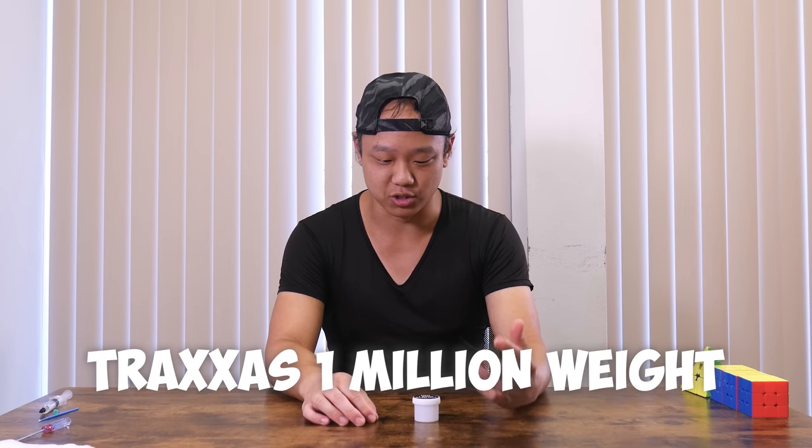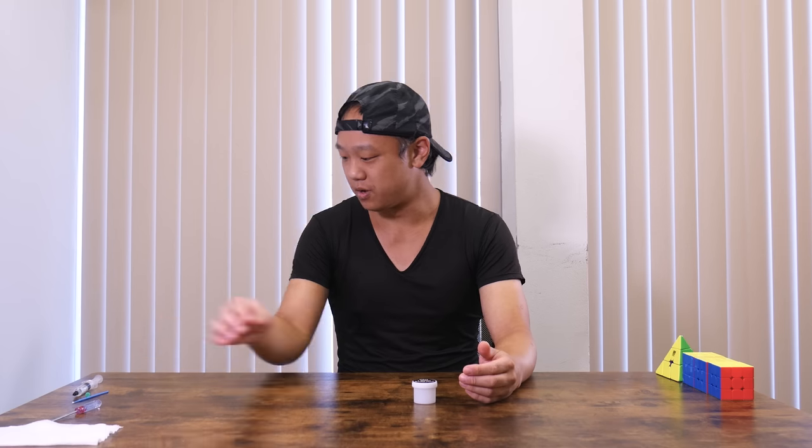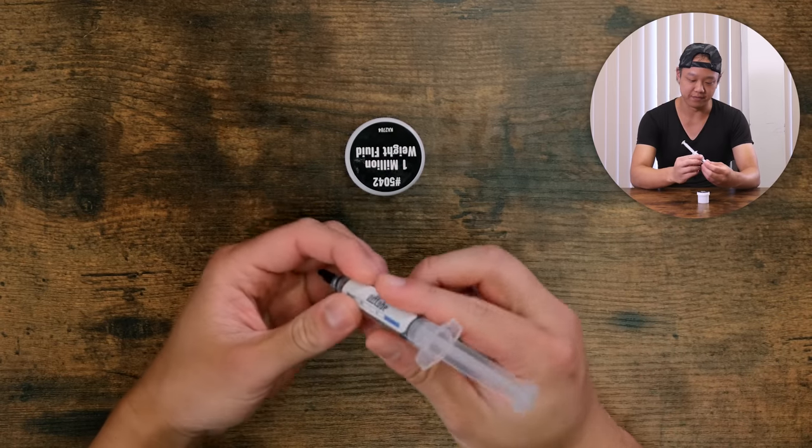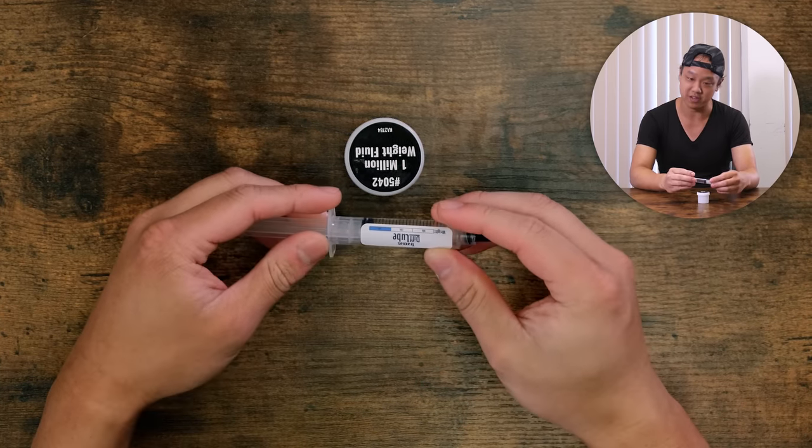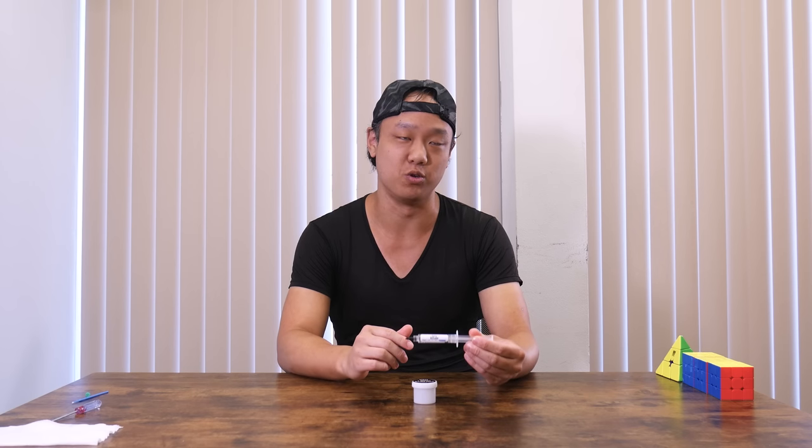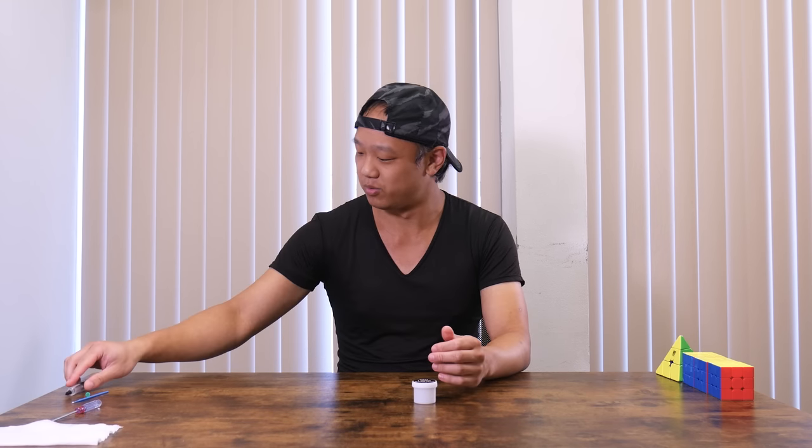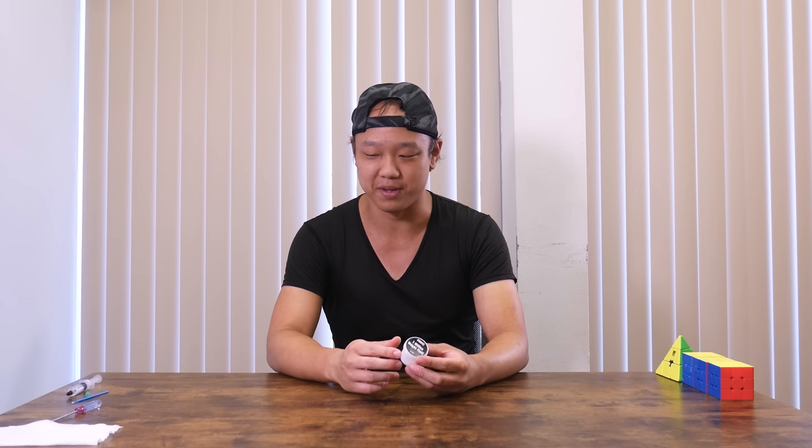Hey, what's up guys. Today I'm going to be showing you a really interesting item that I found. It is Traxxas 1 million weight lubricant. For reference, this is what we normally have at our store, it is 50k. This is the thickest Traxxas lube that we stock right now, but I was lucky enough to find 1 million weight lube. So we're going to open this up and apply it to a bunch of puzzles that we think are naturally really fast and we'll see how this lube performs.